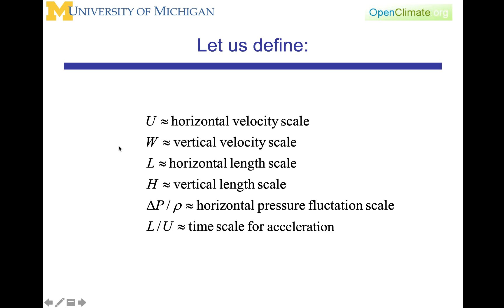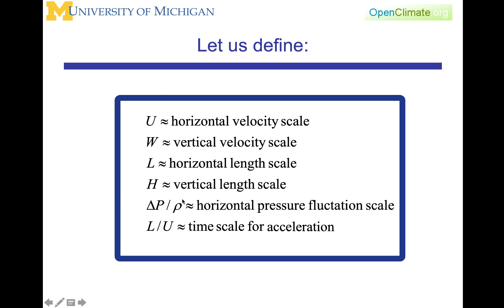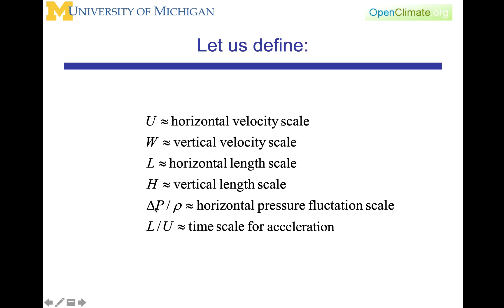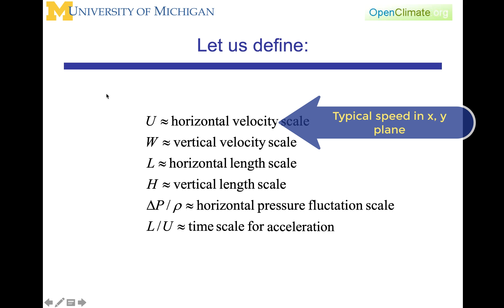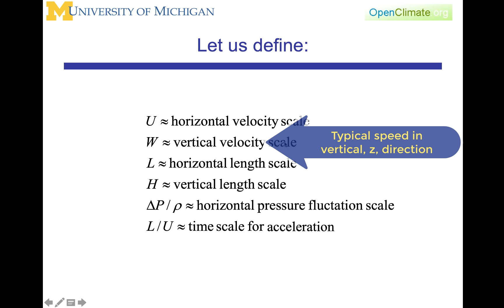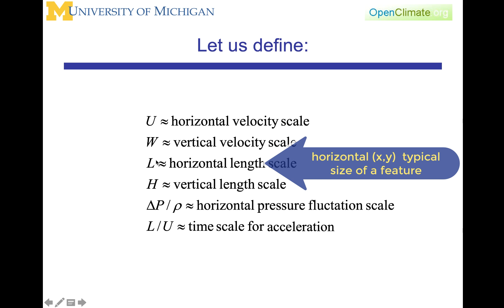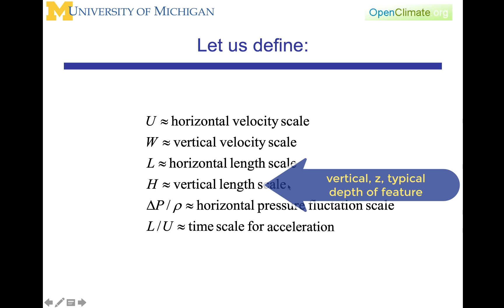Towards that end, we are going to make up these variables that are representative of the scale associated with the different terms in this equation. For example, this term has a velocity and this term has time. We are going to pick U as a horizontal velocity scale suitable for both meridional and zonal or x-y velocities. We are going to pick W as a vertical velocity scale. We are going to pick large L as a horizontal length scale. We are going to pick H as a vertical length scale.